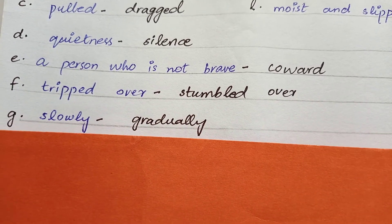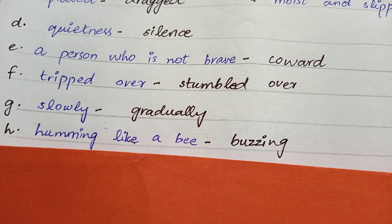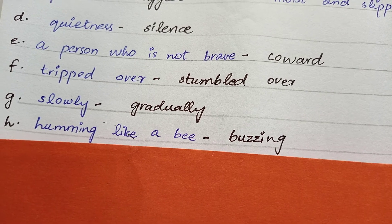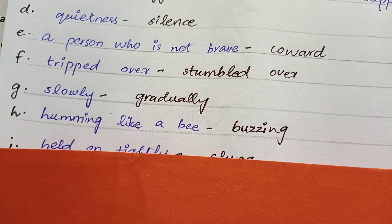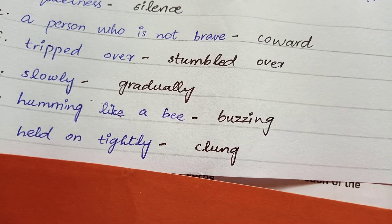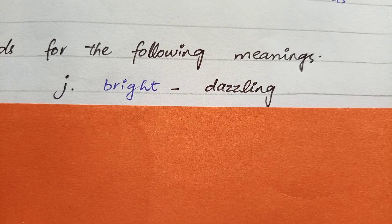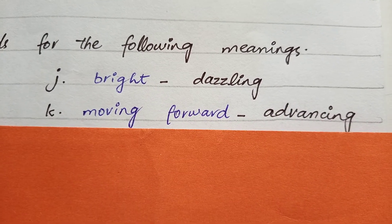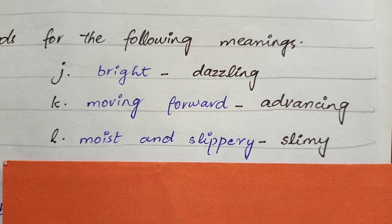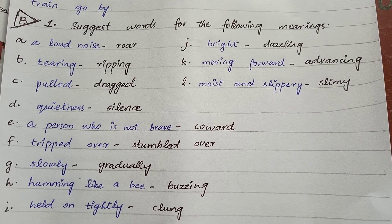'Slowly' — آہستہ سے — is gradually. 'Humming like a bee' — ایک شہد کی مکھی کی طرح بھنبھنانا — is buzzing. 'Held on tightly' — زور سے پکڑ لینا — is clutched. 'Bright' — روشن چمکدار — is dazzling. 'Moving forward' — آگے بڑھنا — is advancing. 'Moist and slippery' is slimy. This completes question number one of part B.